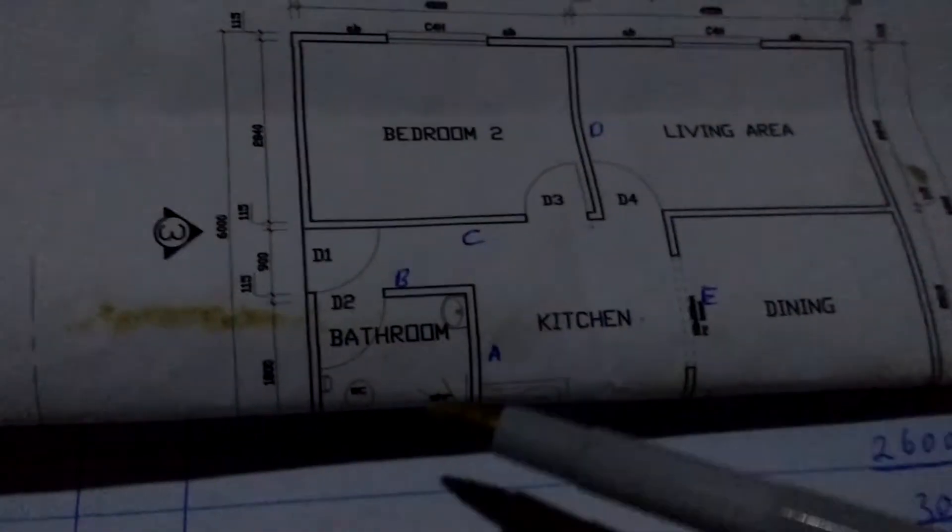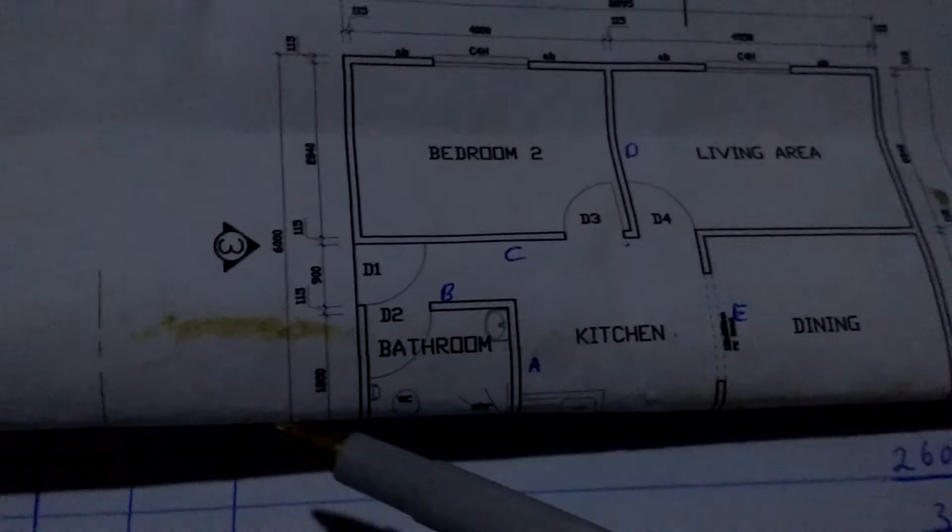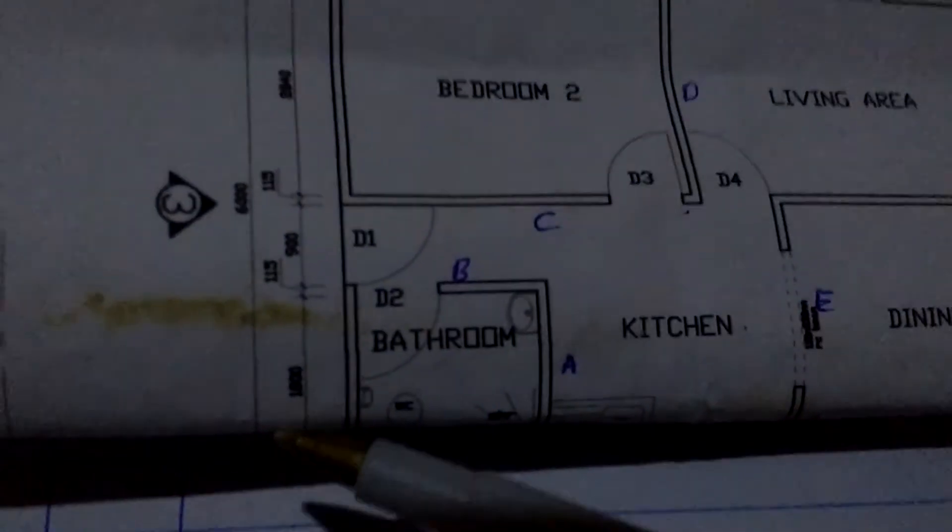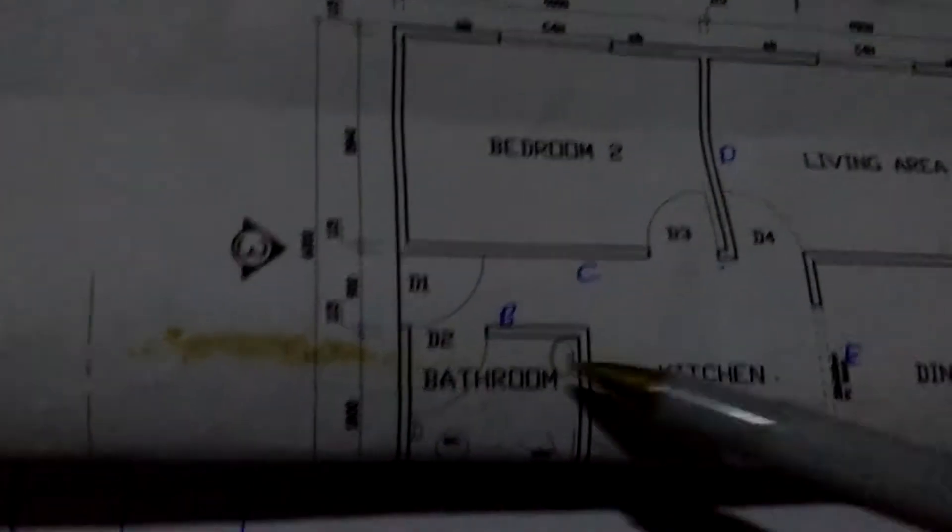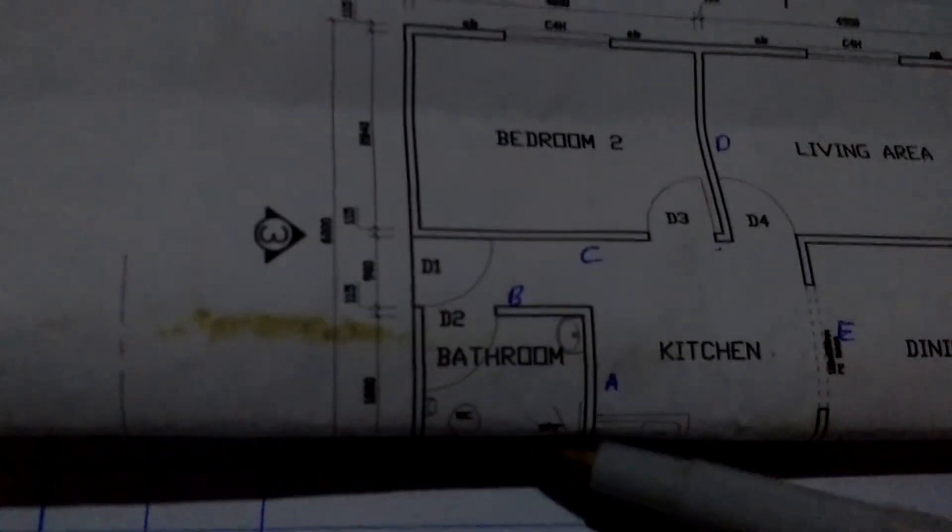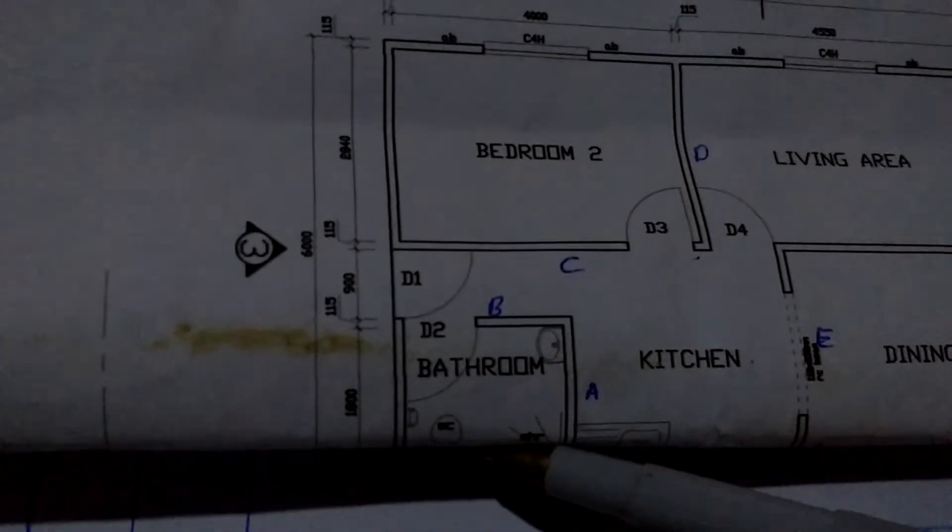Let me show you on the plan. So for wall A, this one, we're going to take the measurement here. That's 1,800 millimeters. And then wall B, the measurement is on this side, that's 2,000. And then wall C.